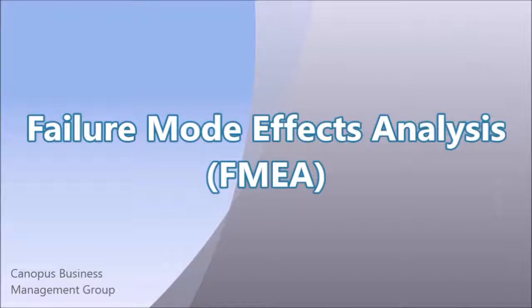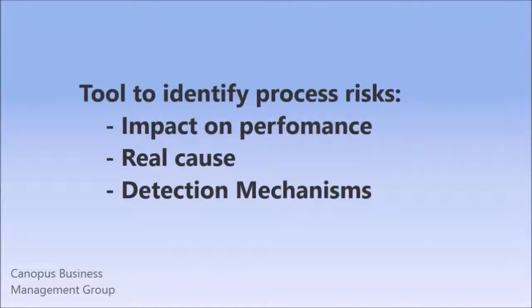In this video, we are going to talk about FMEA, Failure Mode Effects Analysis, and understand what are the various terms used in FMEA. FMEA is nothing but a tool that is used to identify various process risks, their impact on the final outcome of the process — which is what in Six Sigma we call as CTQ, or in many other places we call as Key Process Measure — the real cause for the occurrence of these risks, and the mechanisms which are present to detect these risks.